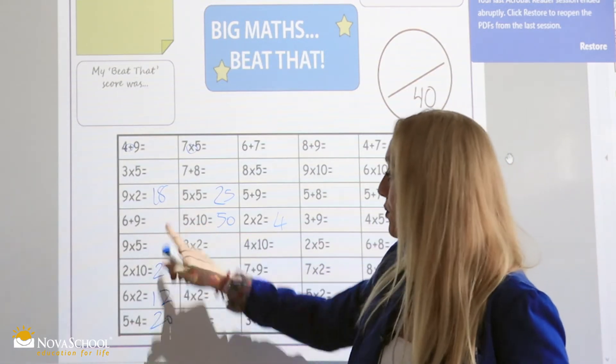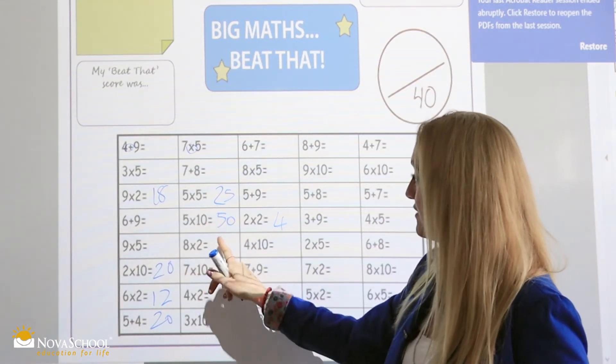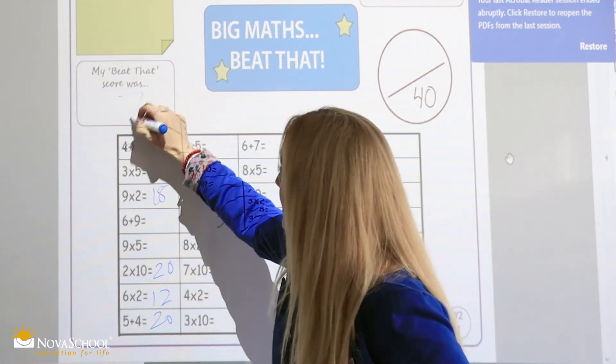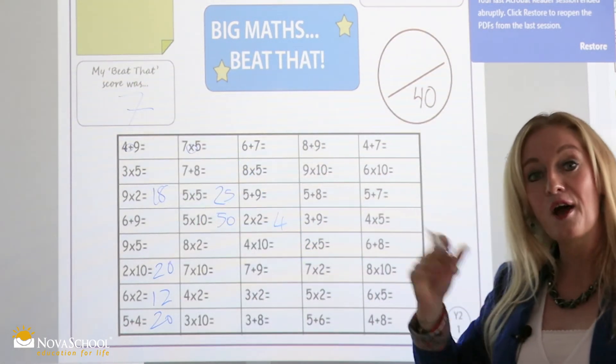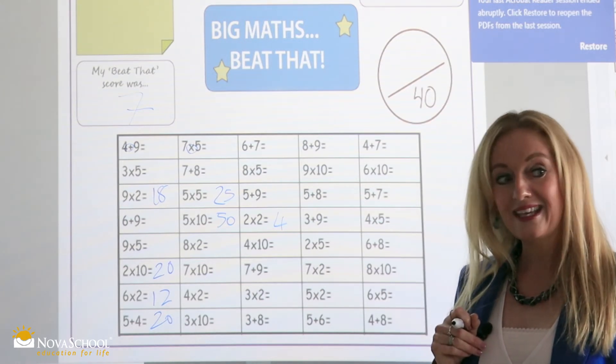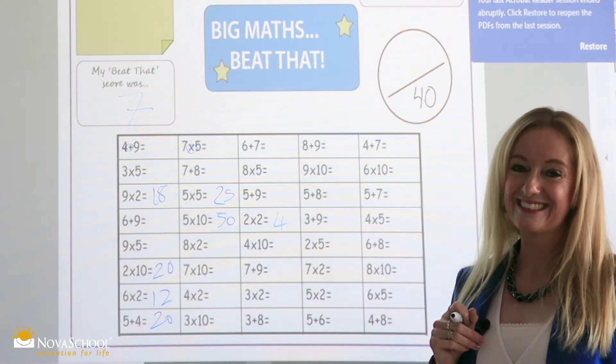Let's see how many I got. One, two, three, four, five, six, seven. I did seven questions, so I'm going to pop my seven here, and then hopefully next time, I'll get a better score. So, keep practicing. Thank you.